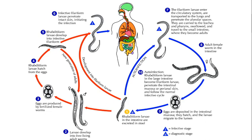At this point, the filariform can go both ways. First, when the patient defecates, the filariform larvae are released with the stool. Or second, the filariform larvae may burrow right back into the skin of the perianal region. In some cases, they don't even reach the perianal region and just burrow right into the rectal lumen without exiting the body of the host. We call this phenomenon auto-infection.